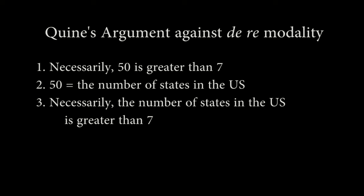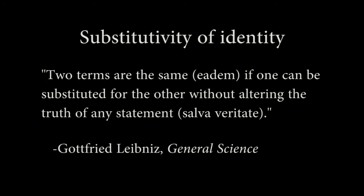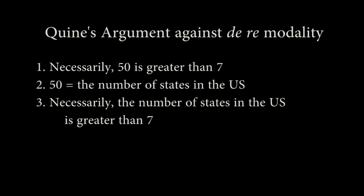Quine states that premises 1 and 2 are true, while premise 3 is false. Yet if 50 is equal to the number of states, then we should be able to substitute one term for the other with no change in the resulting statement's truth value. The problem here, as Saul Kripke pointed out, is that there is a difference between rigid and non-rigid designators. A rigid designator picks out the same thing in all worlds.